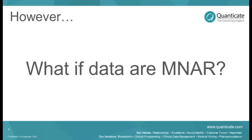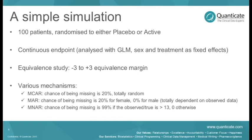However, what do we do if the data are missing not at random? This question is actually ill-posed because we will never really know if the data are truly missing not at random. We can make the assumption, or we can assume that they are not MNAR and see what would happen - what would be the impact on our analysis and the interpretation if they actually were.